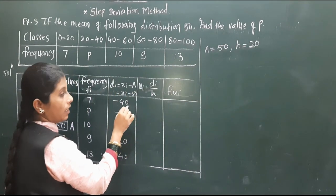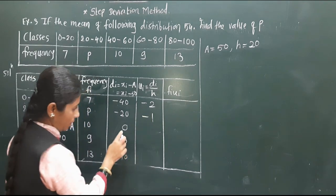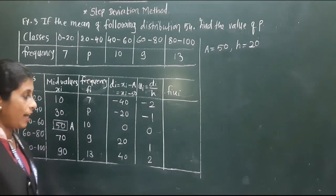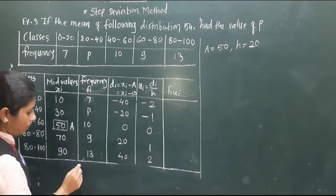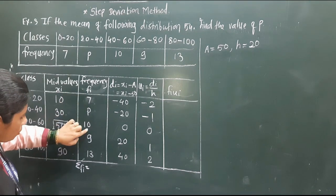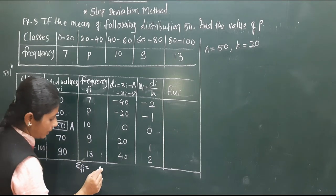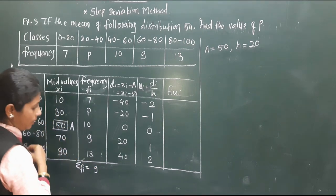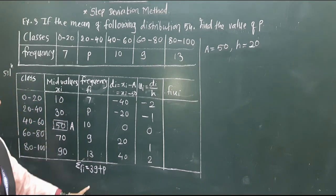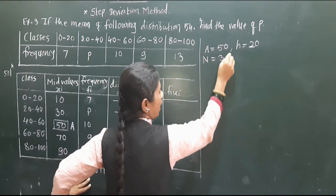Computing di equals xi minus 50: 10 minus 50 equals minus 40; 30 minus 50 equals minus 20; 50 minus 50 equals 0; 70 minus 50 equals positive 20; 90 minus 50 equals positive 40. Now ui equals di divided by h. The common factor of the di values is 20, so h equals 20. Thus: minus 40 divided by 20 equals minus 2; minus 20 divided by 20 equals minus 1; 0; 1; and 2.